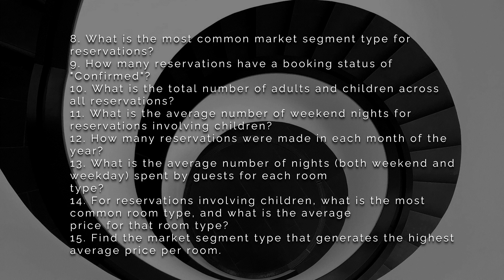Number 9: how many reservations have a booking status of confirmed? Number 10: what is the total number of adults and children across all reservations? Number 11: what is the average number of weekend nights for reservations involving children? Number 12: how many reservations were made in each month of the year? Number 13: what is the average number of nights — both weekend and weekday — spent by guests for each room type? Number 14: for reservations involving children, what is the most common room type and what is the average price for that room type? Number 15: find the market segment type that generates the highest average price per room.